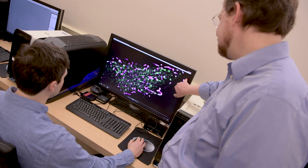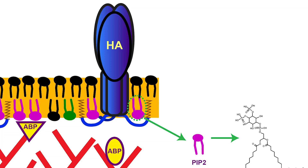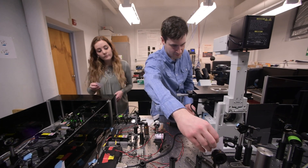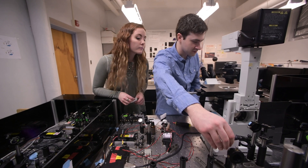We think that the HA and the PIP2 are interacting through the tail on the HA, which is a very short region, but it's very much consistent from strain to strain. You could screen a bunch of different drugs to see if something is able to block that interaction.